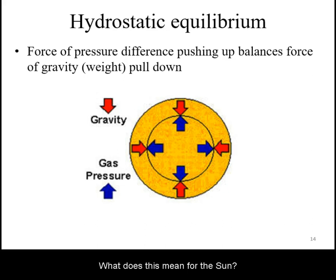What does this mean for the Sun? The Sun's massive gravity must be counteracted by some force. In this case, it will be provided by the pressure of the high temperature gas from inside.